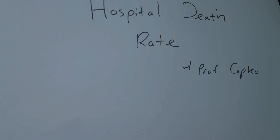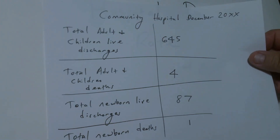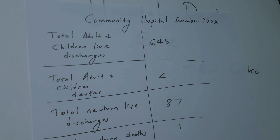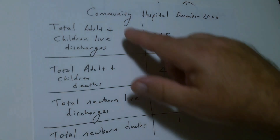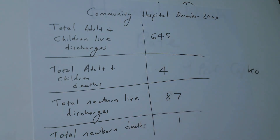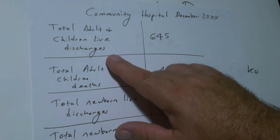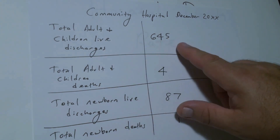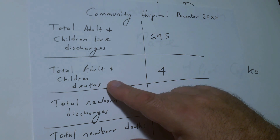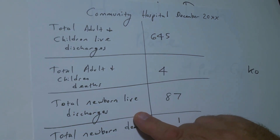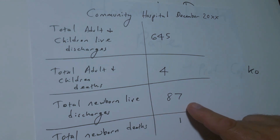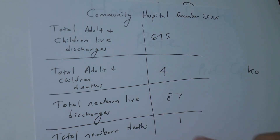First of all we're going to use some data for a community hospital for a fictional year. On the left is the information and on the right is the number. Adult and children live discharges is 645. Adult and children deaths are 4. Total newborn live discharges is 87 and total newborn deaths equals 1.